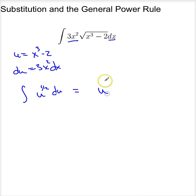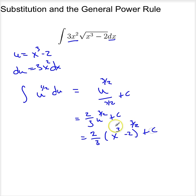So this is u to the three-halves divided by three-halves plus c, or this is two-thirds u to the three-halves plus c. So it's two-thirds, now u is x cubed minus 2 to the three-halves plus c.